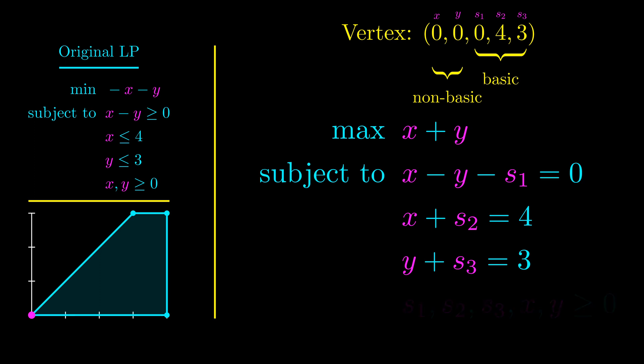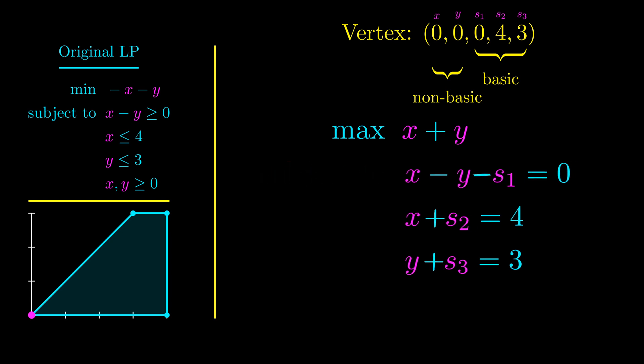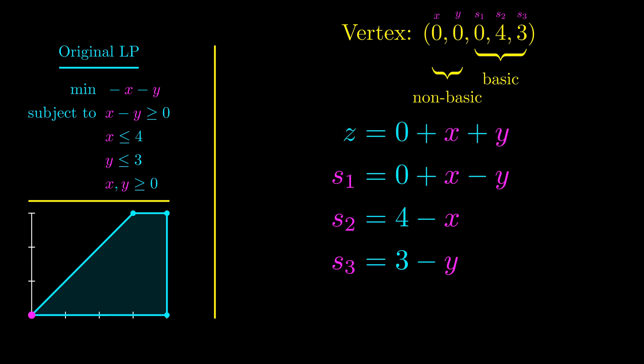First, we won't explicitly write the non-negativity constraints. They'll still be there, we just won't write them. Next, we rewrite the constraints such that the non-basic variables are all on one side. Here, the non-basic variables for this vertex are x and y. Finally, we'll let the objective be denoted as z.